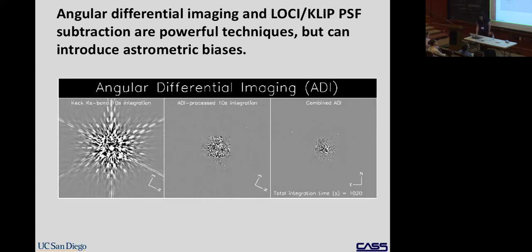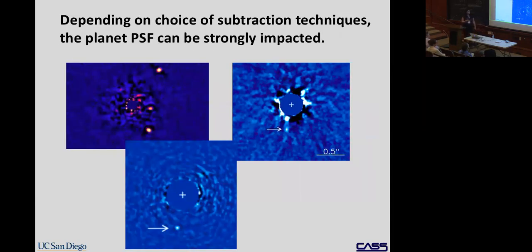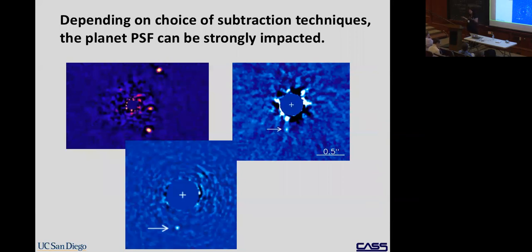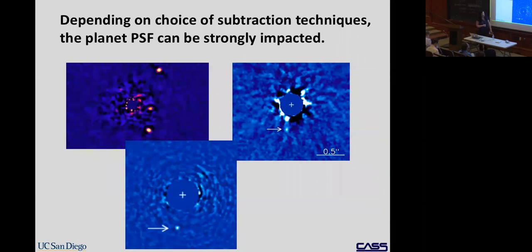ADI is extremely powerful for revealing planets but it introduces astrometric biases. The PSF subtraction leaves dark self-subtraction residuals around each planet. The PSF of the star varies over time — you get the best match with frames taken close in time — but allowing the planet little time to rotate away means you subtract some of the planet's own signal. Instead of a nice circular planet PSF, you get a smeared version.